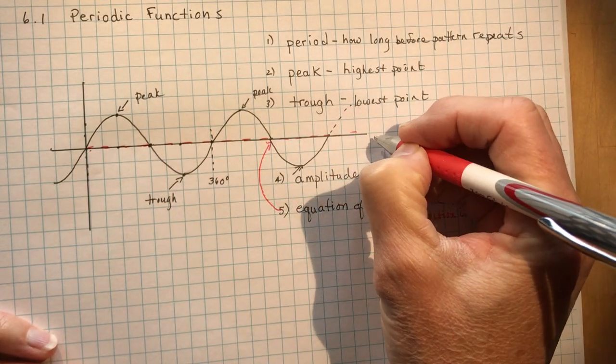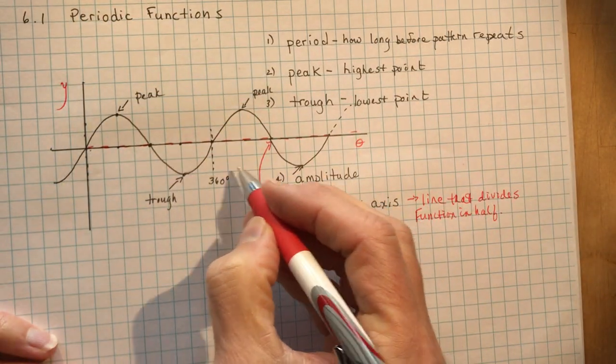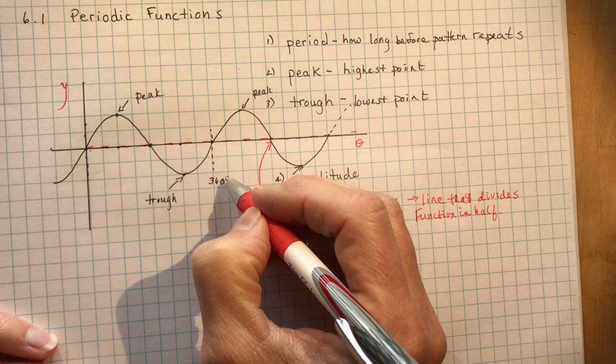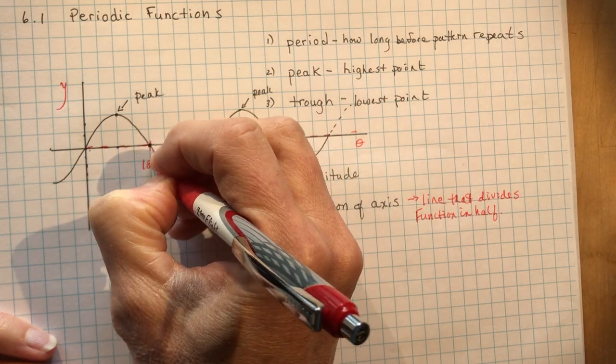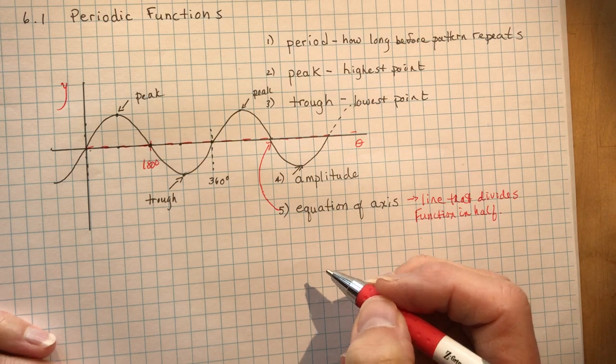So in this case, it would be like y equals zero if this was x and y. Usually it's theta. Alright, so theta 360 degrees, theta 180 degrees. We'll do a lot more of these in 6.2 and so on.